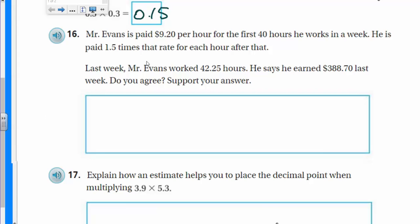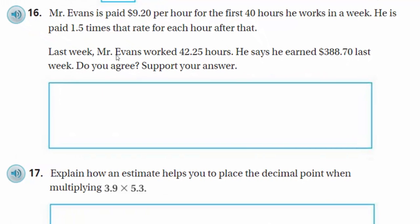Now Mr. Evans is paid $9.20 per hour for the first 40 hours he works in a week. He is paid one and a half times that rate for each hour after that. By the way, that's usually called time and a half. Last week, Mr. Evans worked 42.25 hours. He says he earned $388.70 last week. Do you agree? Support your answer. Okay, I love the challenge of a new problem.